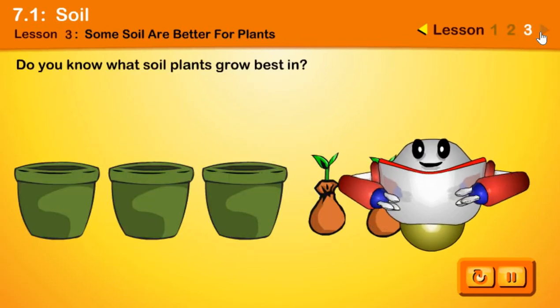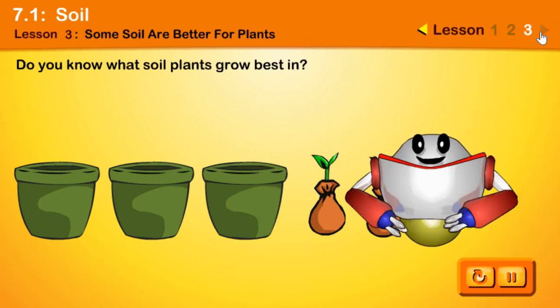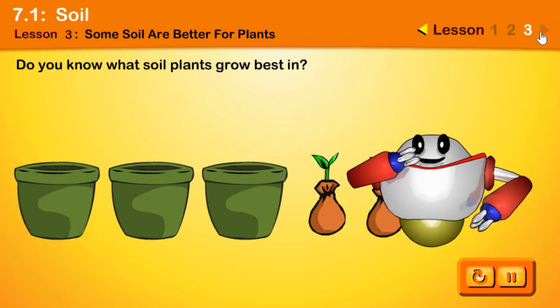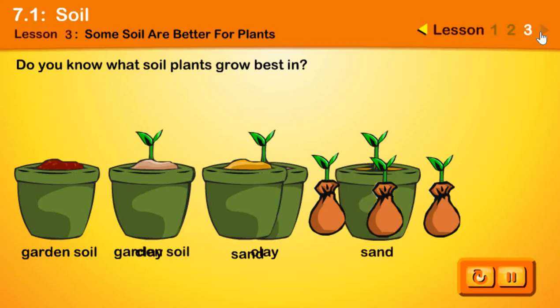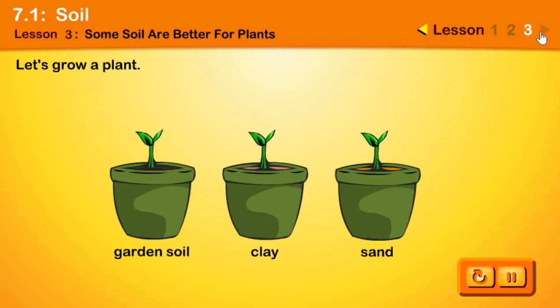Boys and girls, let us find out what soil plants grow best in. We will do a test. First, put garden soil, clay and sand in different pots. Each pot has the same amount of soil. Now we shall grow a plant in the three pots. The plants are of the same height.